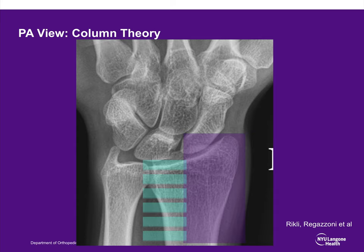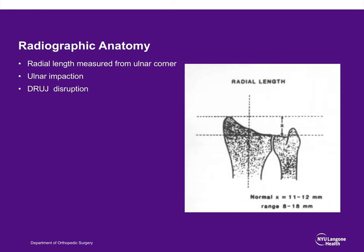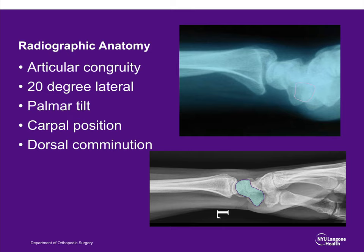On a PA view, one can also see the radial inclination, the relationship of the distal radioulnar joint, whether there is articular congruity, the location of the ulnar styloid, and the radial styloid. We can also see the radial length. On the lateral view, we look for articular congruity. The 20-degree lateral helps us see into the joint. We can look at the degree of palmar tilt—typically about 11 degrees—and look at carpal position and dorsal comminution.